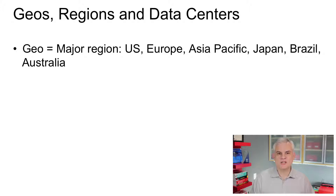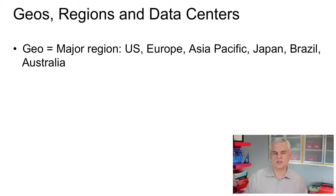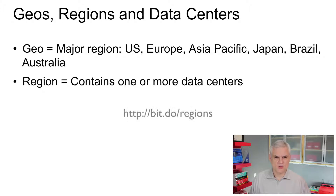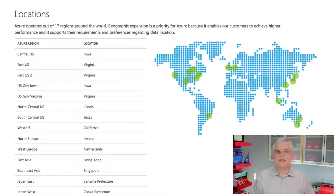A geo is a major region, including the United States, Europe, Asia Pacific, and Japan — though I think they may have changed that to Southeast Asia. Another geo is Brazil, and the newest one is Australia. Each geo can contain one or more regions. If you look at the Azure website marketing page — I've posted a link — you can see a list of locations at the bottom. A given region may have more than one data center.